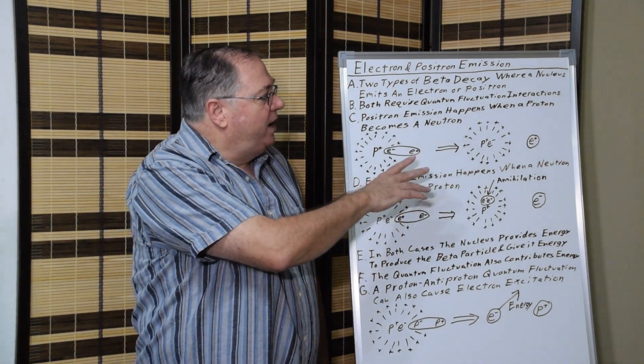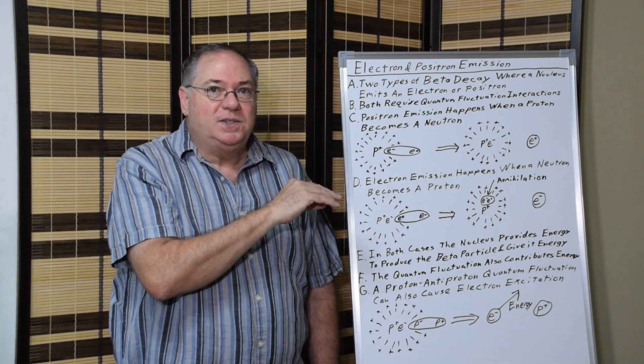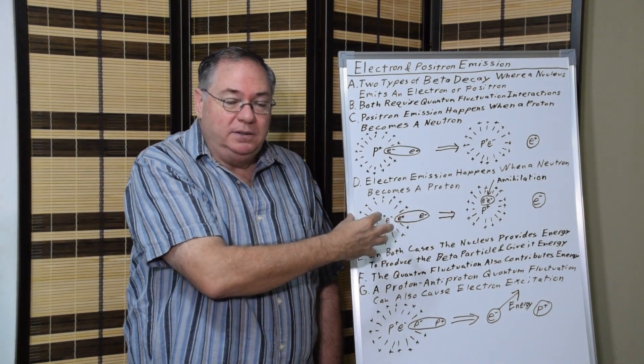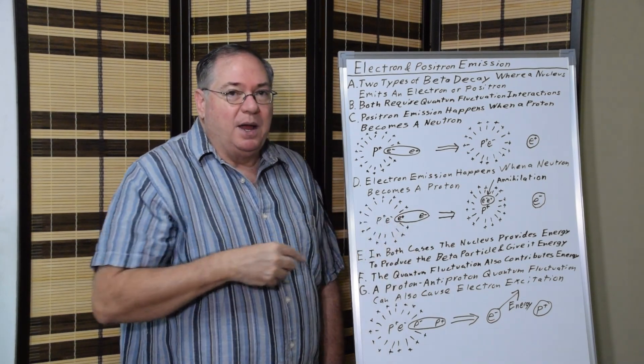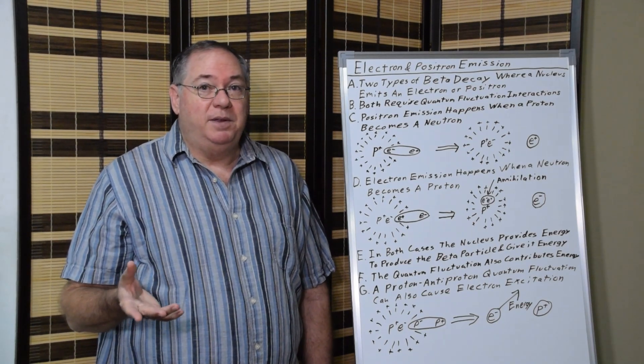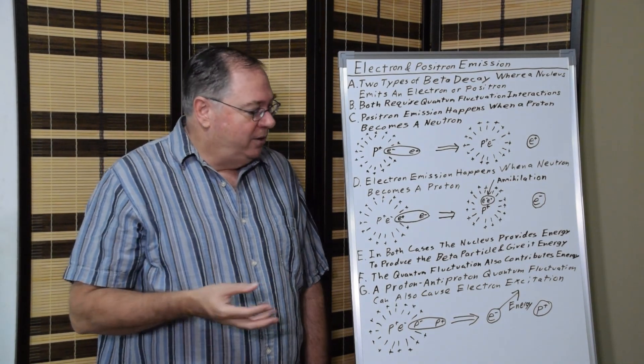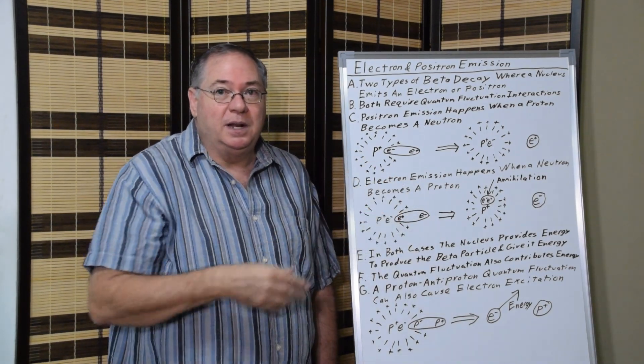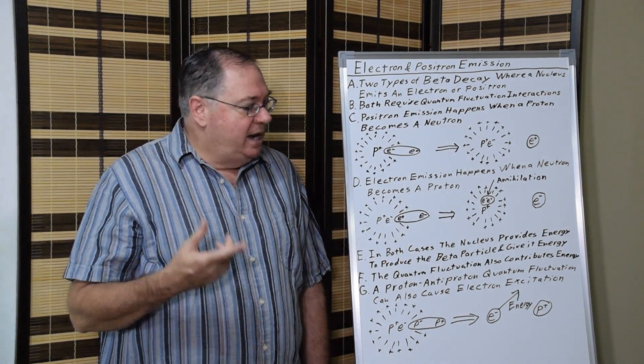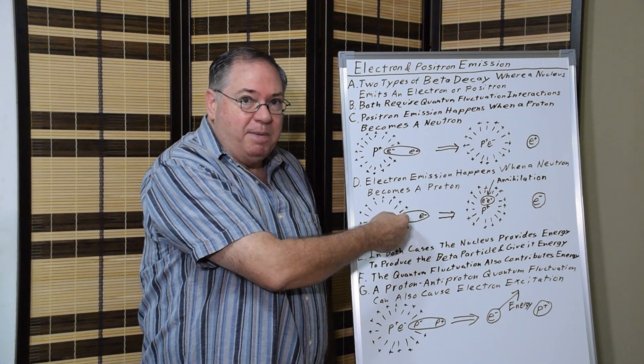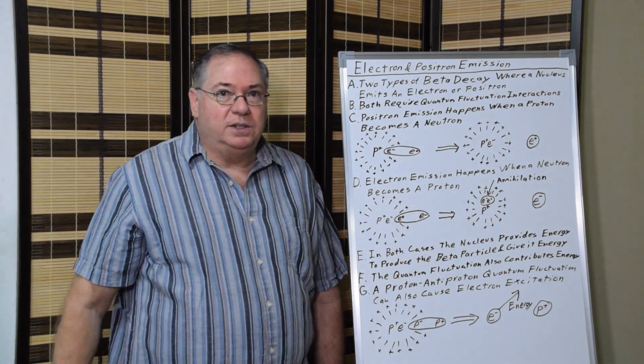When we look at electron emission, it pretty much happens the same way. You have, in this case, a neutron. You have a bare proton, bare electron inside. Or, if you believe in the quark model, you have the quarks that approximate having a bare proton, bare electron. But in either case, it can interact with a positron in order to convert to a proton.